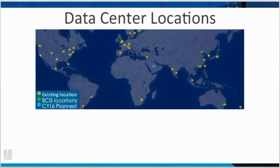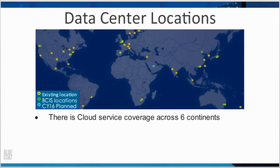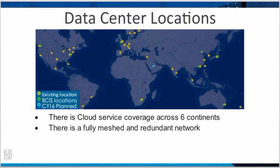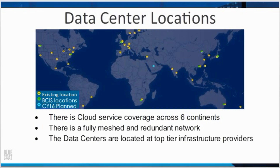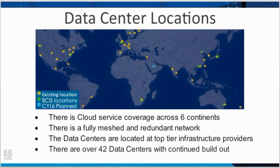Data center locations: there is cloud service coverage with data center locations across six continents. There is a fully meshed and redundant network. The data centers are located at top-tier infrastructure providers. There are over 42 data centers with continued build out.